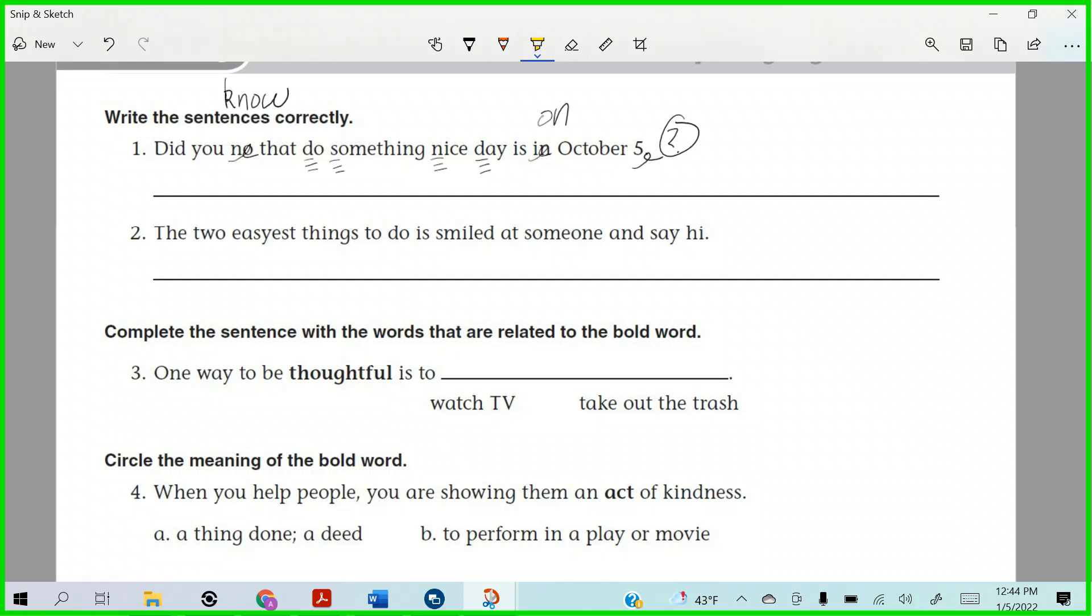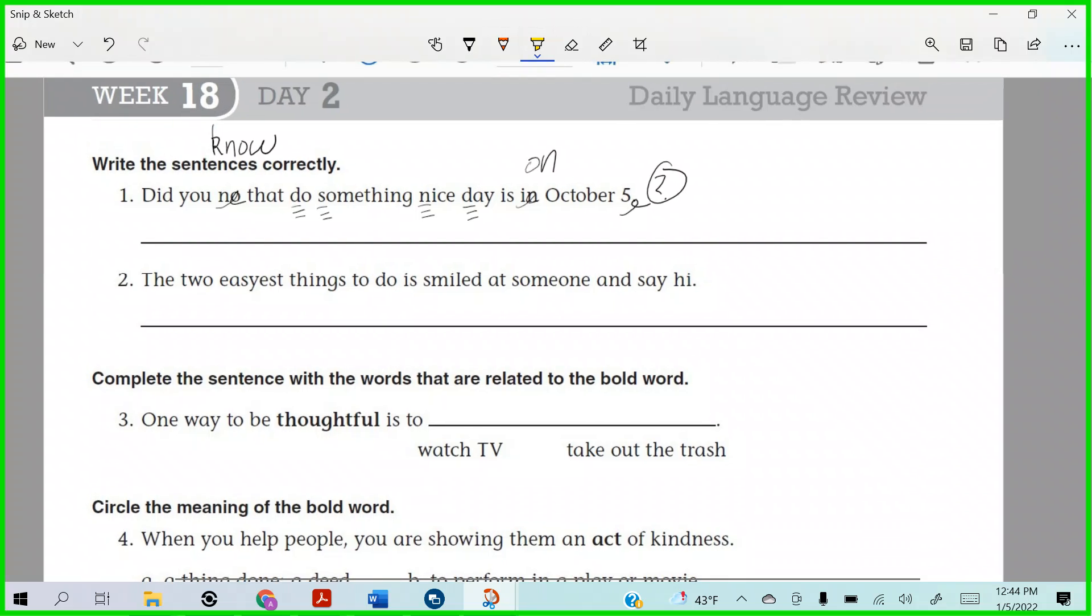Alright, so we have, did you, now let's read it. Remember, because we do what? We read, edit, write. Okay. So did you know that do something nice day is on October 5th? So it looks like we have one, two, three, four, five, six, seven, seven corrections for that one. That's a lot, right?